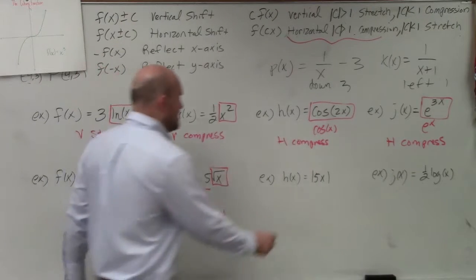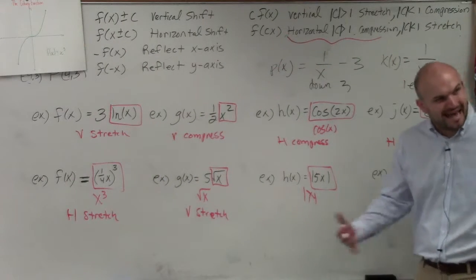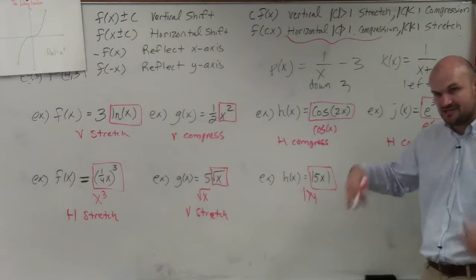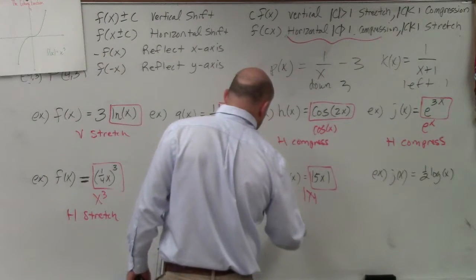Over here, my parent function has changed. It's not the nice, beautiful absolute value of x. It's absolute value of 5x, so it got changed. That tells me I'm multiplying on the inside, so that's a horizontal compression.